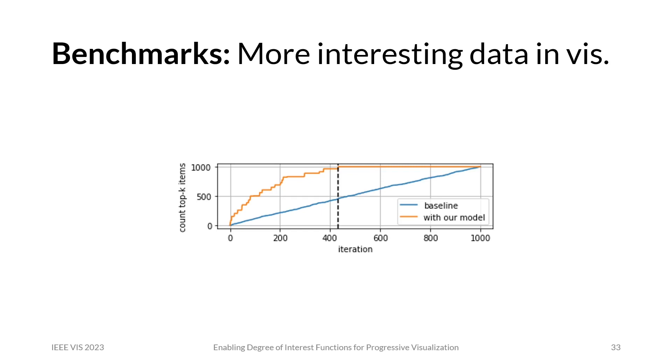We can also see that we find all top 1000 most interesting items much earlier than without our model. More details can be found in the paper.